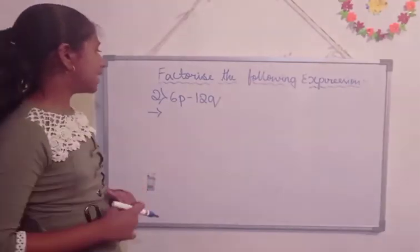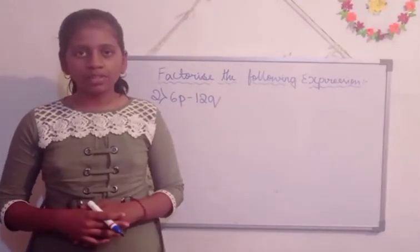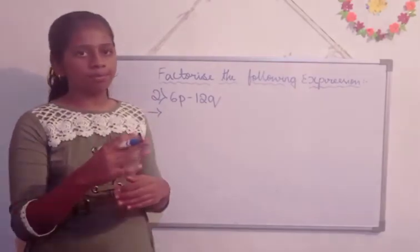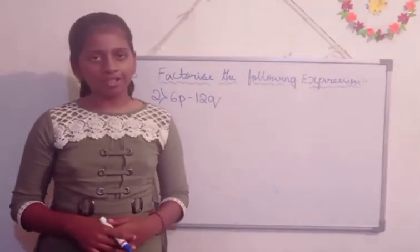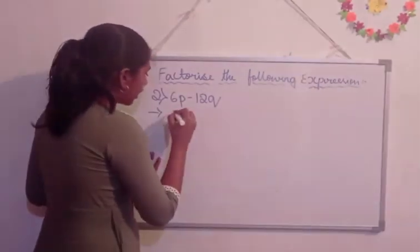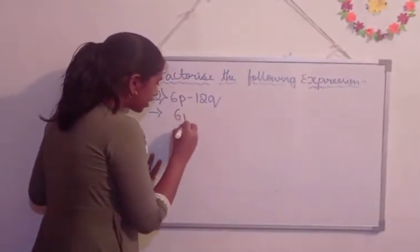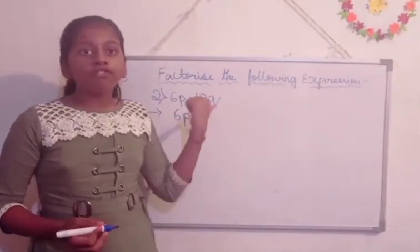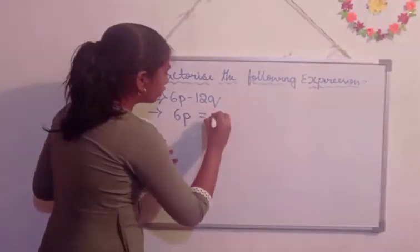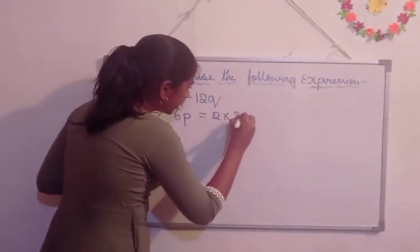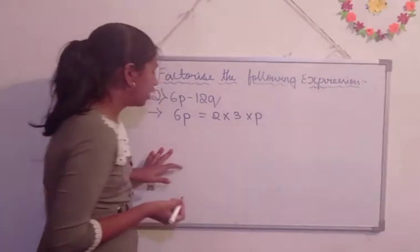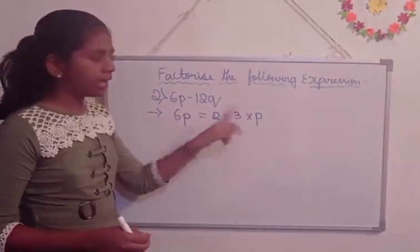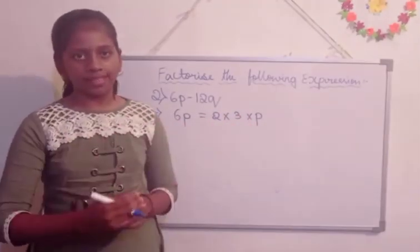So, here is the second question that is 6p minus 12q. Now, we are going to factorize this and find the common factors of 6p minus 12q. So, now let us start. First, we are going to factorize 6p is equal to 2 into 3 into p. Because 2 into 3 means 6 we get and into p as it is, the variable should be written.